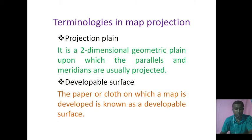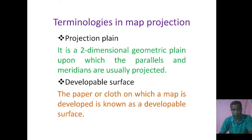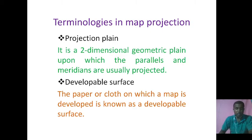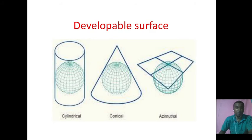Now I am talking about developable surface. In case of planar projection, only a single point is truly represented with the exact one-to-one correspondence. From this point of tangency, the distortion on a map increases in all directions. To minimize it, the point of contact with the generating globe is maximized by using projection surfaces that can easily be developed into two-dimensional geometric planes. Such projection surfaces are known as developable surfaces — for example, a cone or cylinder. The figures of a developable surface include cylinder, cylindrical, conical and azimuthal.